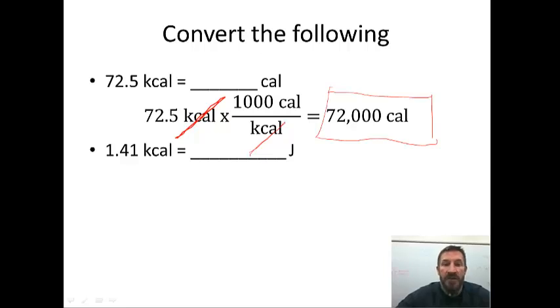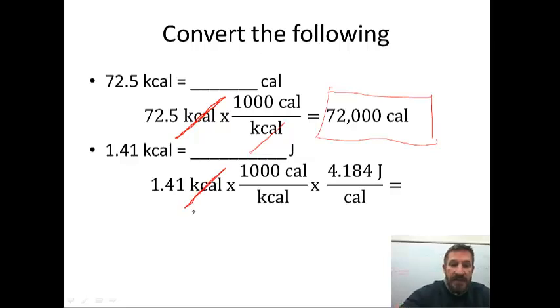1.41 kilocalories to joules. For this, it requires two steps. The first step will be the same as our previous step, where we change kilocalories to calories. But the second step, we want to change calories to joules. And remember, there's 4.184 joules in a calorie. First, kilocalories cancels out. There's a thousand calories in a kilocalorie. And then you want to use a conversion unit. There's 4.184 joules in a calorie. And your calories cancel. So 1.41 times 1,000 times 4.184. It should be 5.90 times 10 to the third joules should be your answer.